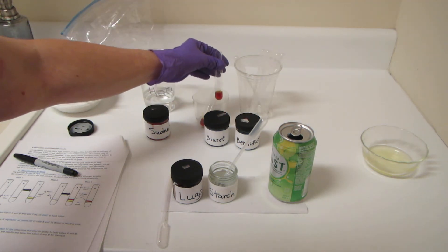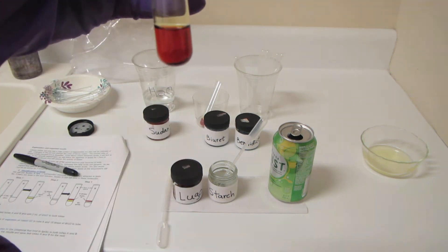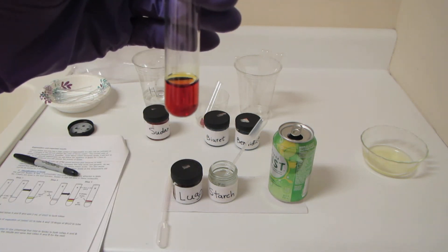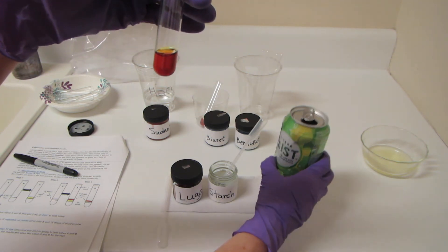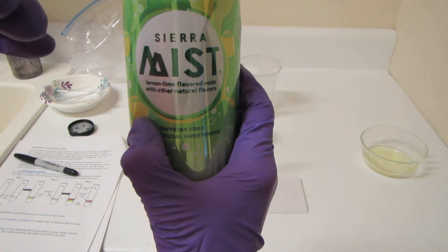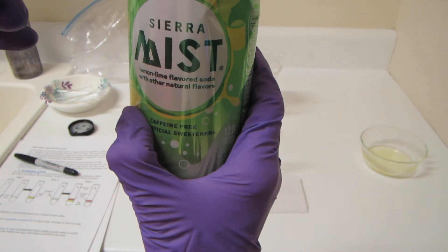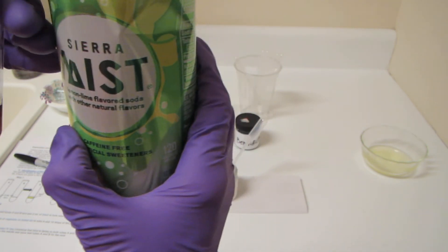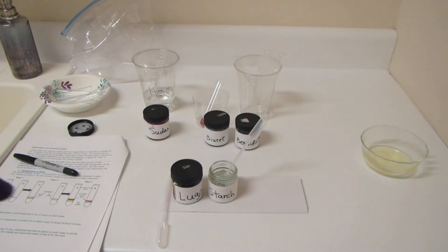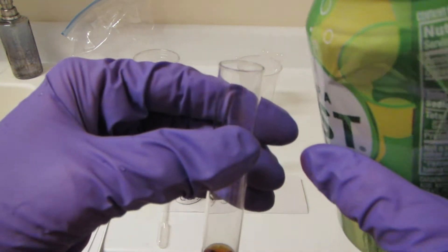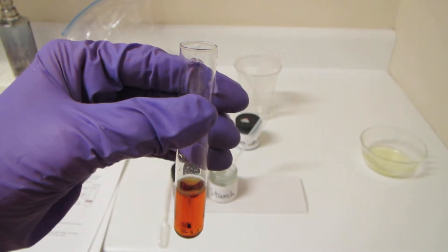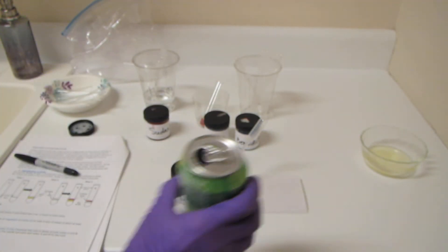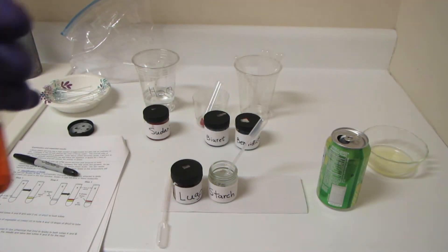I'm going to take one of these and put something in it that contains simple or reducing sugar. Look, we have some Sierra Mist here, and this is the one that has real sugar in it. I'm going to pour a little bit of Sierra Mist into that container with the Lugols, trying not to spill it.